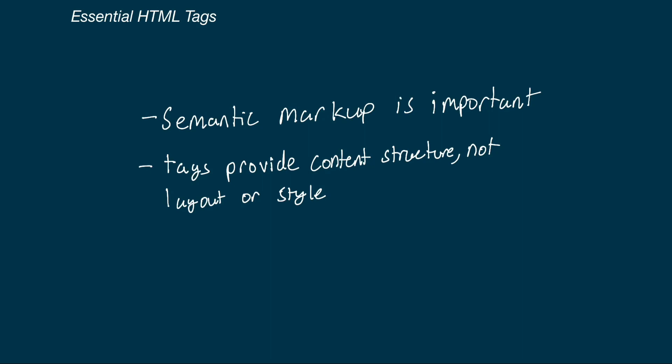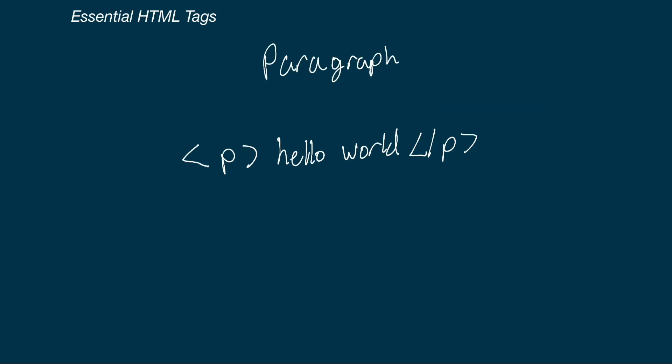Hey everybody, welcome back to Frontend Expert. In this video, we're going to be going over some essential HTML tags. We can't possibly go through every single tag, but we'll go through some of the most frequently used ones and ones you might be expected to know on the spot. One very important point: semantic markup means we want to always use the correct tags for what our HTML means — describing content as best as possible. These tags provide content structure, not layout and style. HTML does not define what tags actually look like — those are default styles applied by the browser that we can change with CSS.